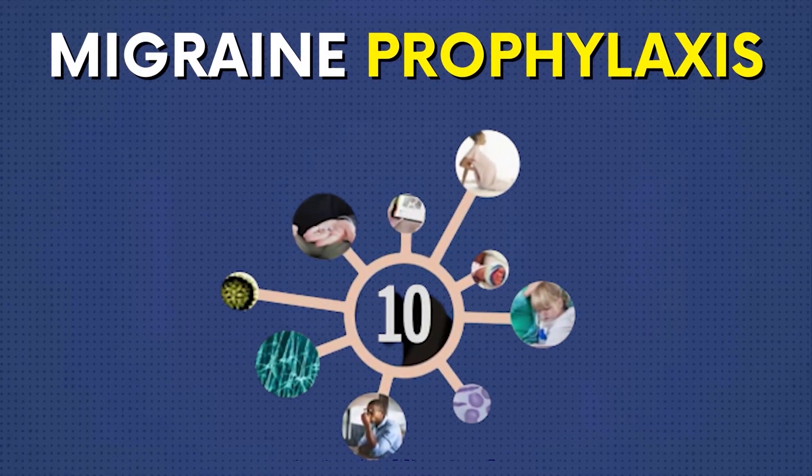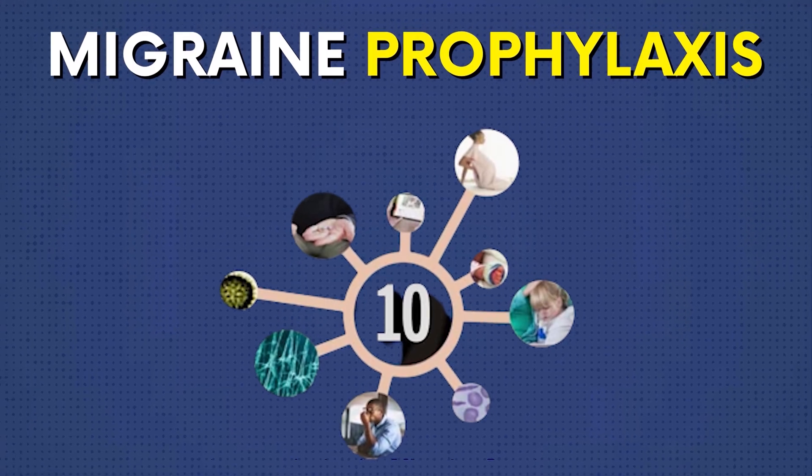The second use of Valproate is it is used in bipolar disorder as a mood stabilizer. Thirdly, Valproate is also used in migraine prophylaxis where it is a very effective drug and it is given in resistant cases of propranolol, which is considered to be the drug of choice for migraine prophylaxis.